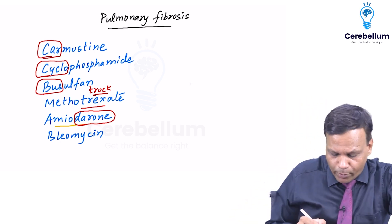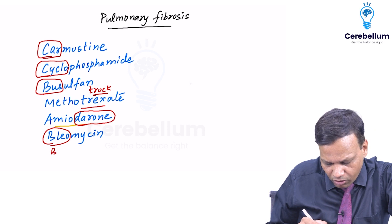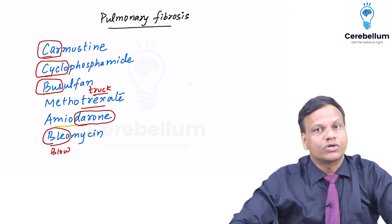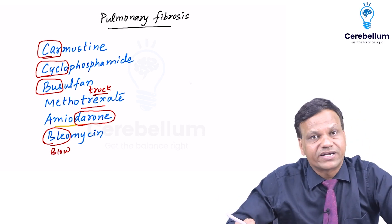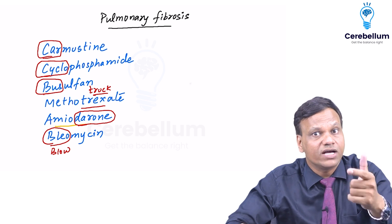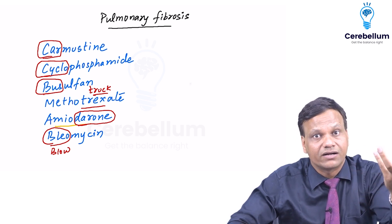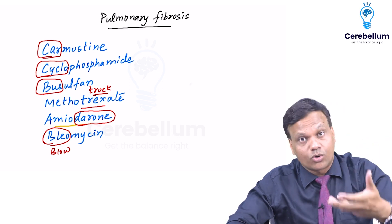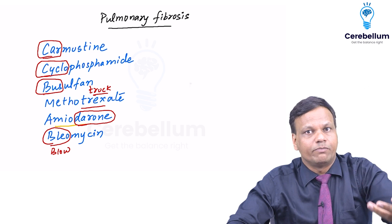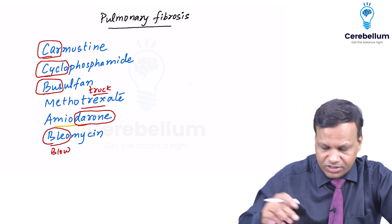Blow the horn means bleomycin. So you can easily remember the drugs causing pulmonary fibrosis with the names of vehicles: cycle, bus, truck, car, and drone — and they will blow the horn, meaning bleomycin.